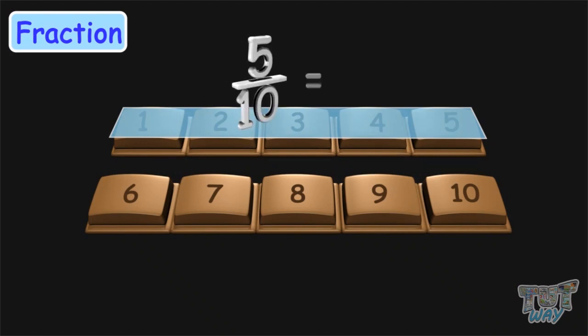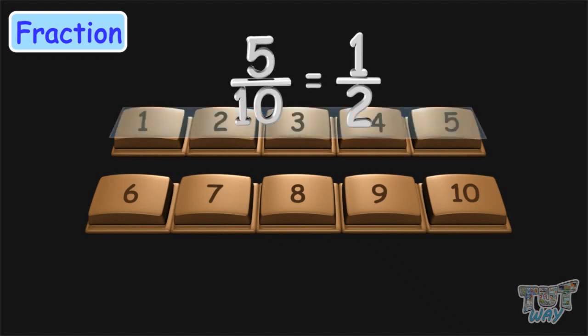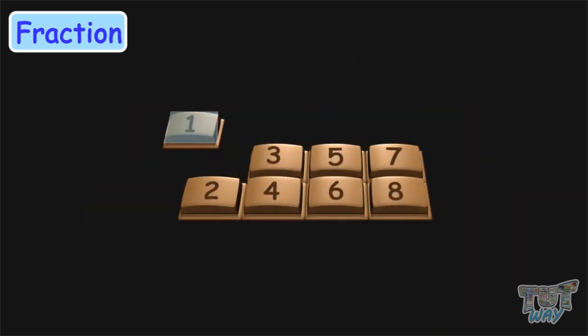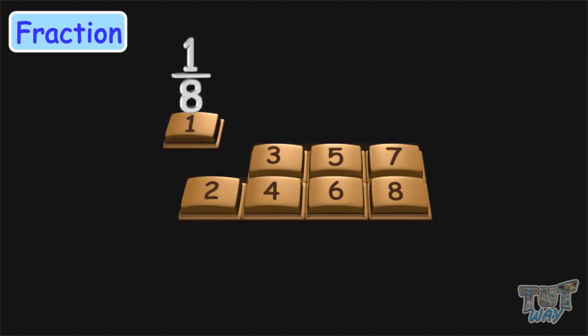Five by ten equals to one by two. So you have taken half of the chocolate, or five by ten — that is five parts out of ten equal parts. Similarly, one eighth is one part out of eight equal parts.